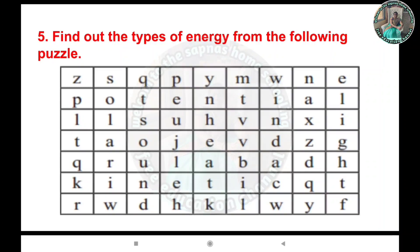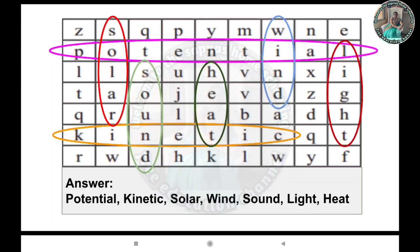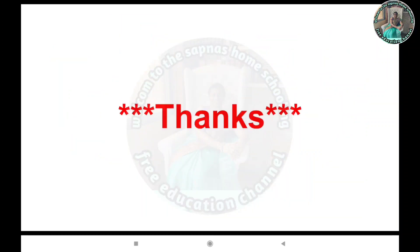Question 5: Find out the types of energy from the following puzzle. Answer: Potential energy, kinetic energy, solar energy, wind energy, sound energy, light energy, and heat energy. In this way, we have solved all the question answers.